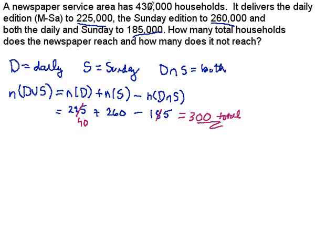That's a pretty easy addition. So there's 300 total subscribers. And then if there was 430 altogether, the ones that do not read, the non-subscribers, is going to be 430 minus 300, which would be 130,000 people. So that's one way to set the problem up and work it out.